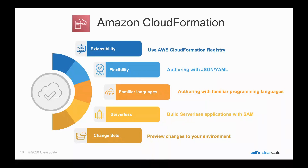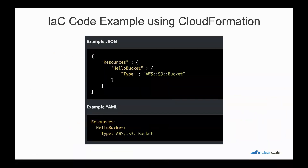Those are pretty much the main features of CloudFormation. This is how it looks in code — a plain text file following JSON or YAML format. With this you're telling the system you want an S3 bucket named 'hello bucket.' Once you give this to CloudFormation it will deploy exactly what you asked for. This is also true for virtual machines, databases, and all the services that AWS provides.